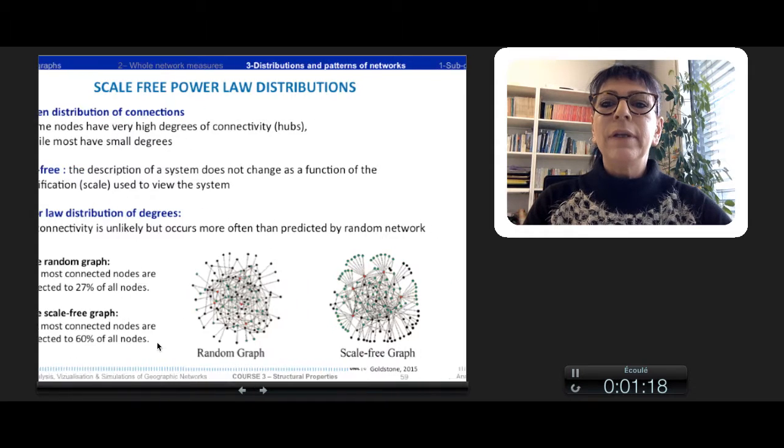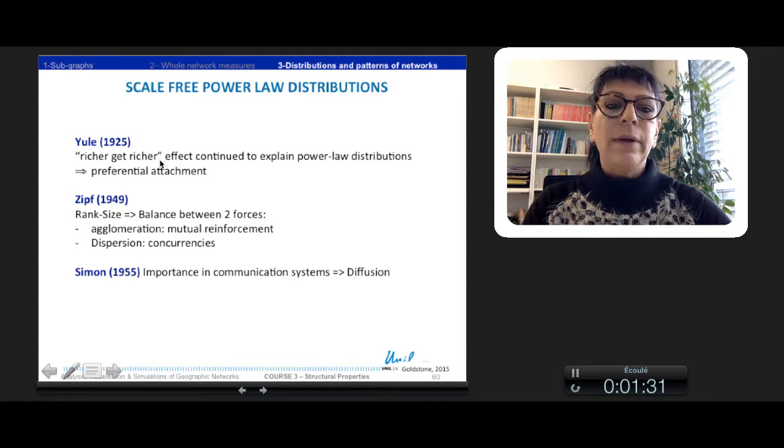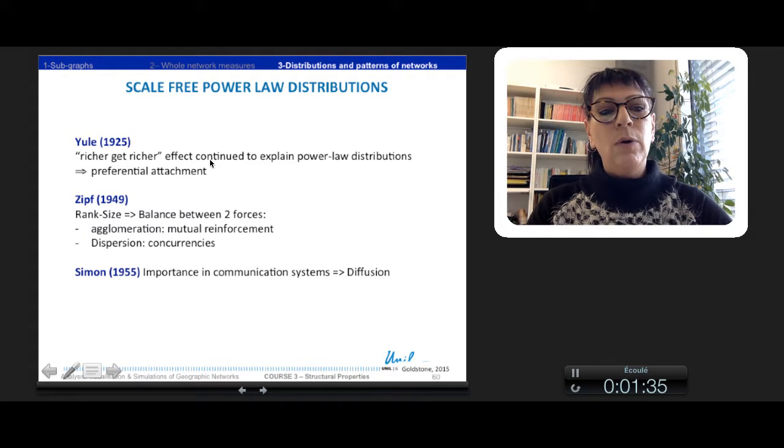This kind of distribution is built by what we call the Yule effect. The dynamic process of Yule is that the richer get richer, and this effect continued to explain power-law distribution.